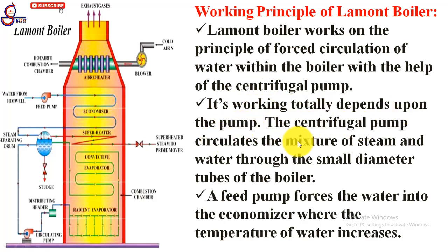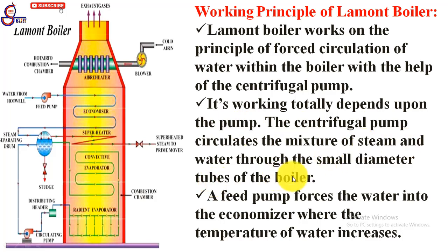The centrifugal pump circulates the mixture of steam and water through the small diameter tubes of the boiler. The feed pump forces the water into the economizer where the temperature of the water increases.